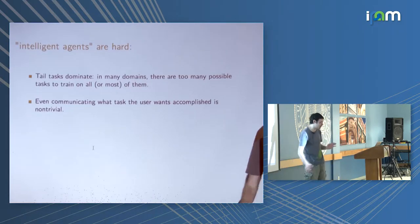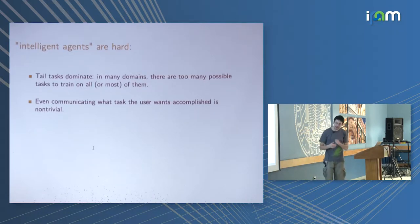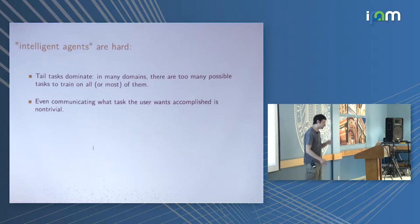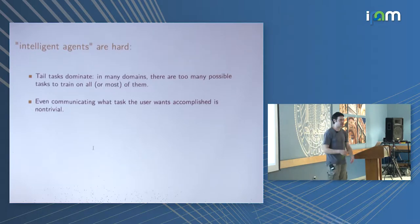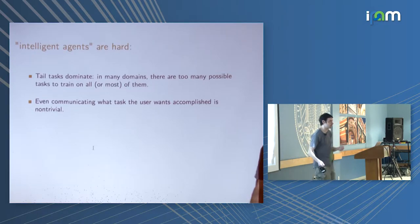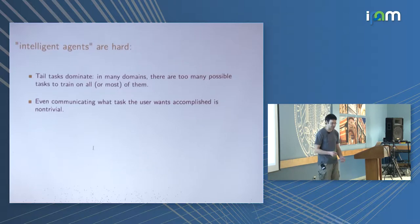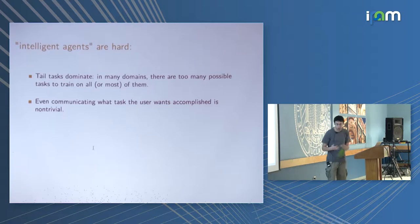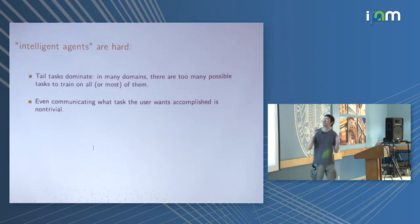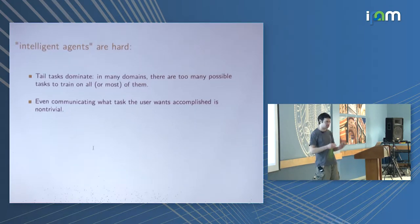The basic premise motivating us is that intelligent agents are hard. At an ambitious level, think of something like Alexa or a personal assistant, or even more simply, something that would build things out of Lego for you. One of the many reasons why intelligent agents are hard is because you expect it to be able to do a lot of things. It's not a single task.